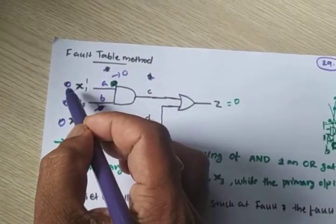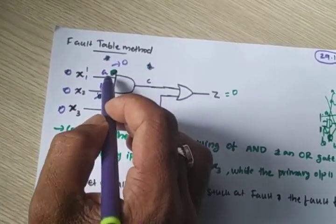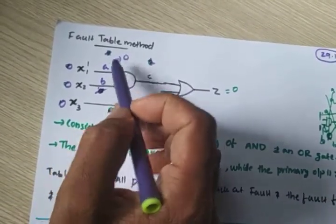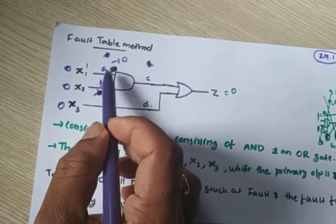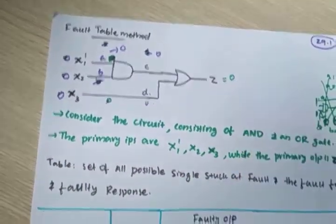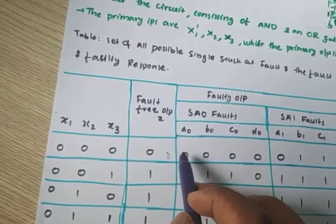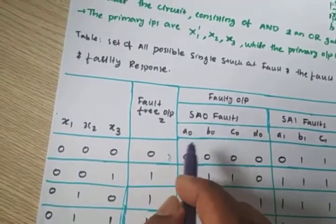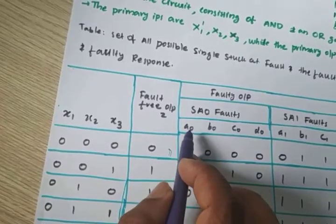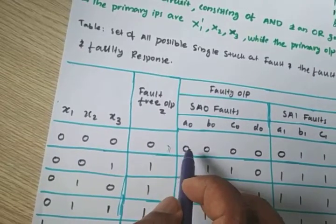Input is stuck at this point — always this point is considered as 0. If a is stuck-at-0 and input is 0, then a=0 regardless. The output is 0, same as fault-free output of 0. So no fault detected — same output means no problem. The fault-free output is 0.